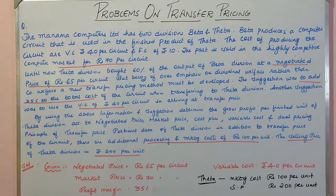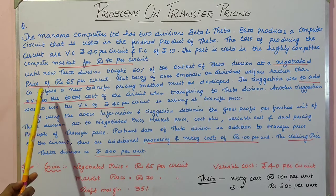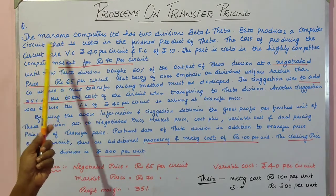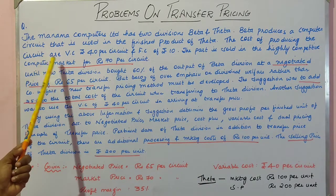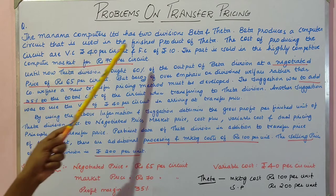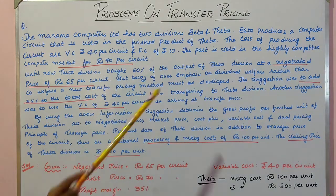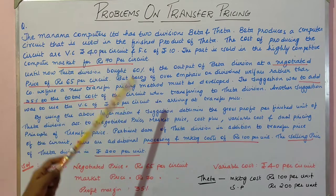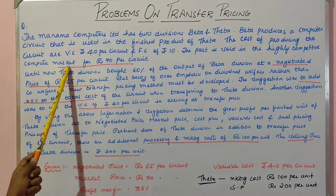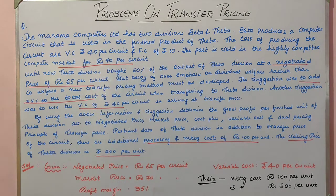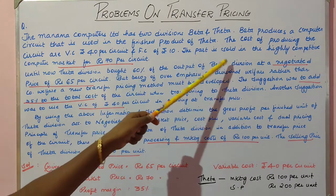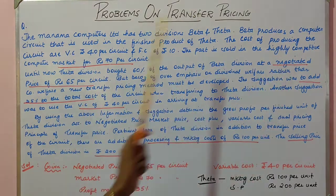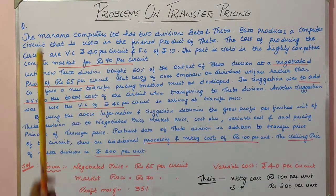In the question, there is a Manama company with two divisions named Beta and Theta. Beta produces circuits, which are ultimately used as a finished product of the Theta division. The cost of producing in Beta is: variable cost 40, fixed cost 10. Beta sold part of its output in the open market at Rs 70 per circuit. Theta division generally buys 60% of the output of Beta division at a negotiated price of Rs 65 per circuit.